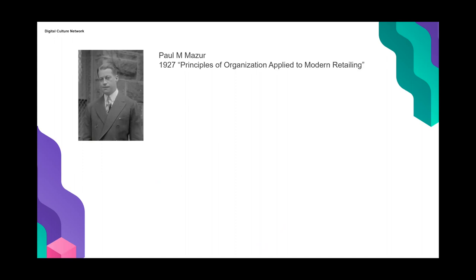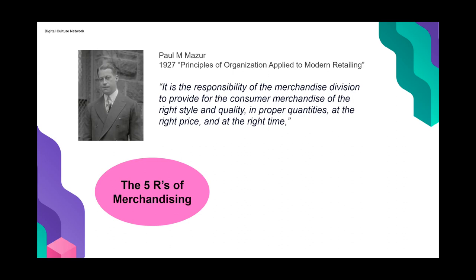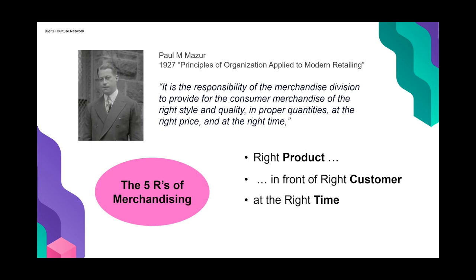Mazur said: 'It is the responsibility of the merchandise division to provide for the consumer merchandise of the right style and quality, in proper quantities, at the right price, and at the right time.' This has come to be known as the Five R's of merchandising — the right product in front of the right customer at the right time, at the right price, and in the right quantity. This is quite a foundational theory within merchandising.